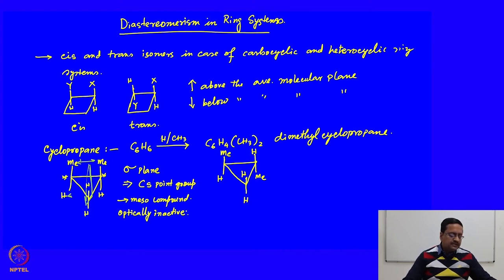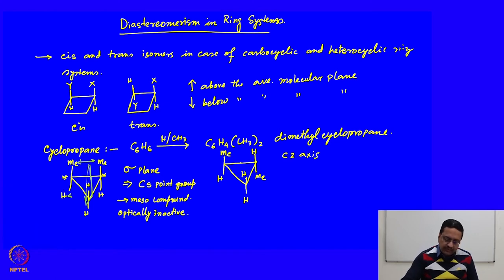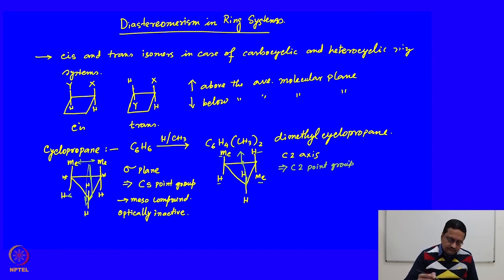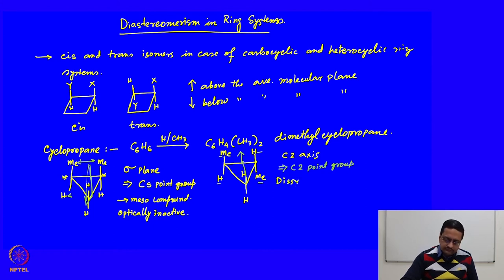The trans compound has a C₂ axis passing through the midpoint of the C–C bond and containing that carbon atom. If we rotate the molecule about that C₂ axis, the upper methyl comes down as the lower methyl, and the upper hydrogen comes down as the lower hydrogen. This molecule has a C₂ axis, so it belongs to the C₂ point group. This molecule is dissymmetric and hence optically active.